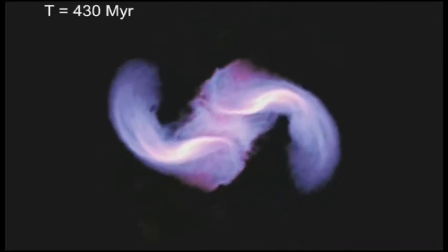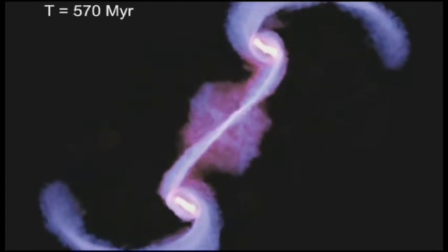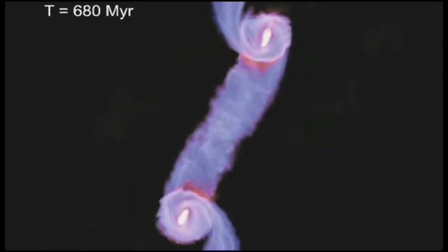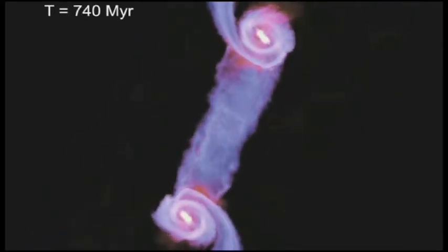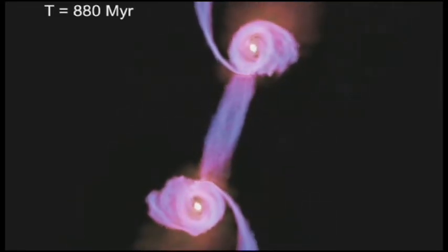This computer simulation shows the fate of gas in the merger of two galaxies with black holes embedded in their cores. As the two pass each other by, the pull of gravity disrupts their spiral shapes, forcing huge volumes of gas into their cores.